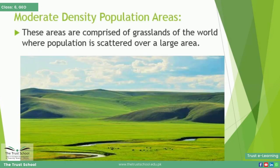Now let's discuss moderate density population areas, which come at number two. These areas are comprised of grasslands of the world where population is scattered over a large area. The density of population ranges between 10 to 50 persons per square kilometer.